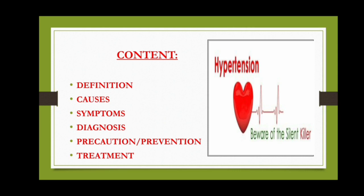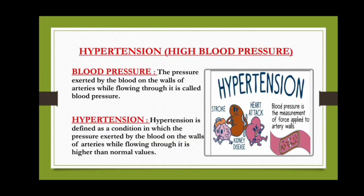I am going to discuss about what is hypertension, its causes, symptoms, diagnosis, prevention and treatment. Before we start, we should know about what is blood pressure. The pressure exerted by the blood on the walls of arteries while flowing through it is called blood pressure. Hypertension is defined as a condition in which the pressure exerted by the blood on the walls of arteries while flowing through it is higher than normal values.